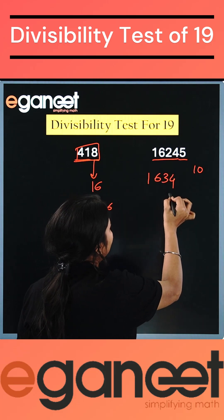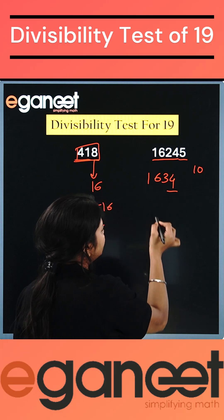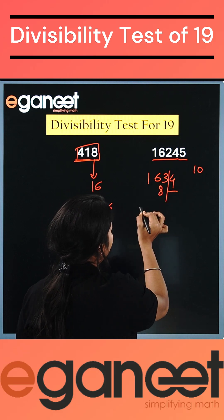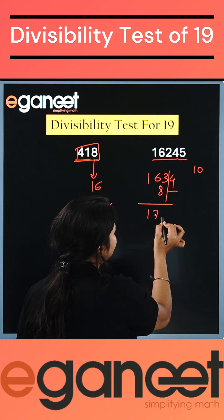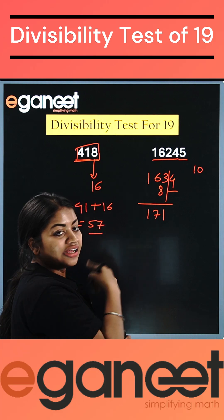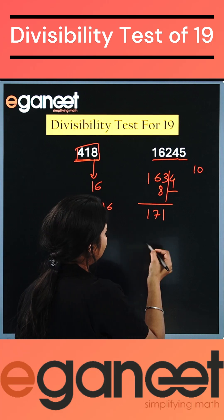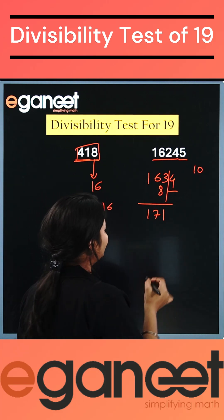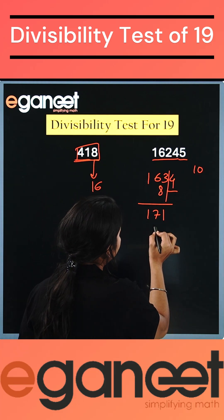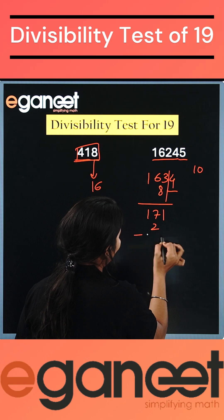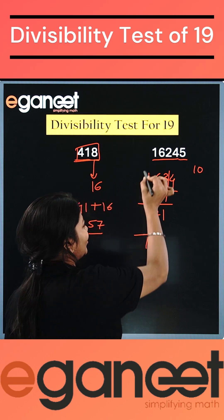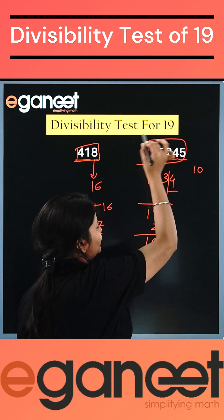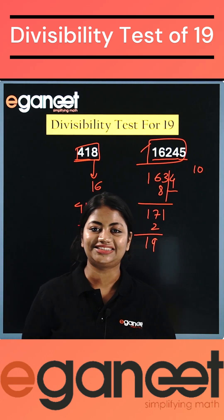Let's do the same thing again. The double of 4 is 8. Let's add 8 to the remaining number, getting 171. Now the double of 1 is 2, so let's add 2 to 17. I am getting 19, so I can say this number is divisible by 19.